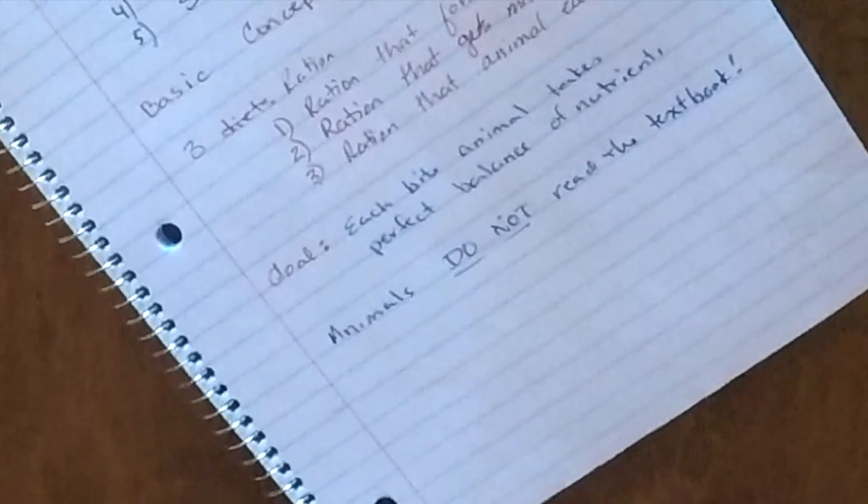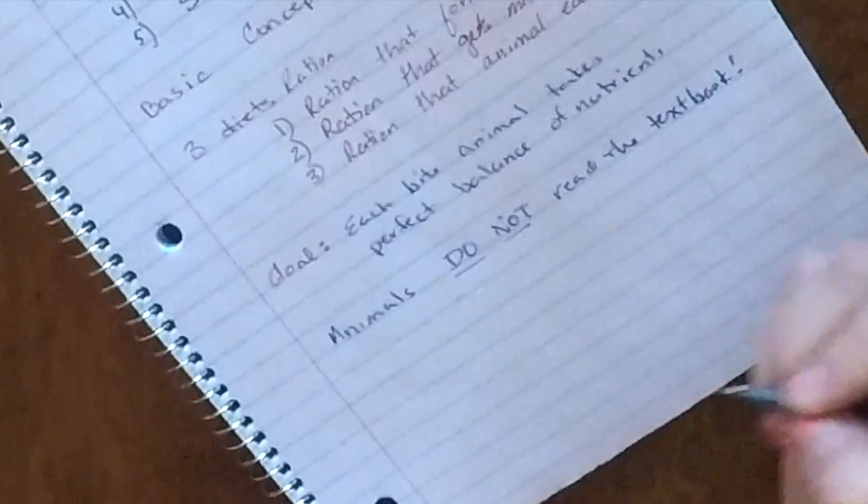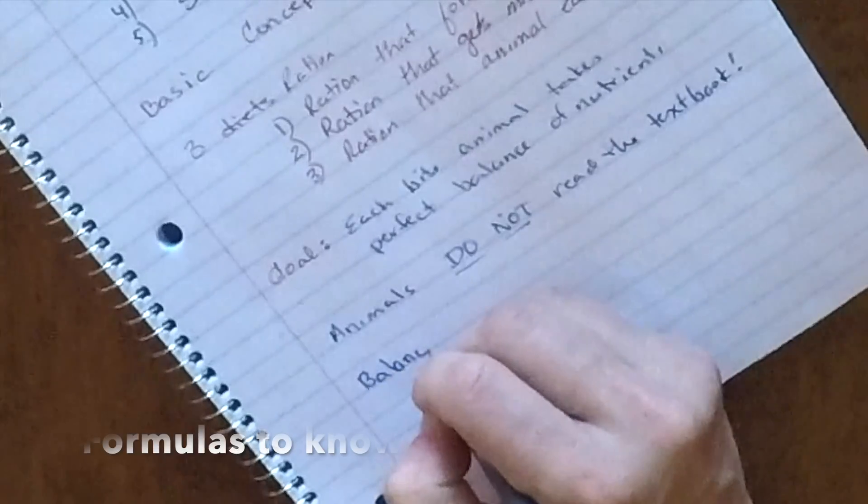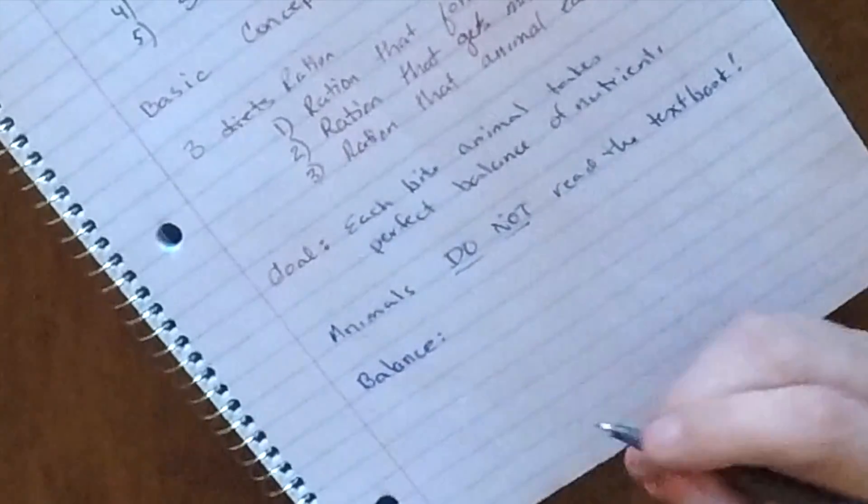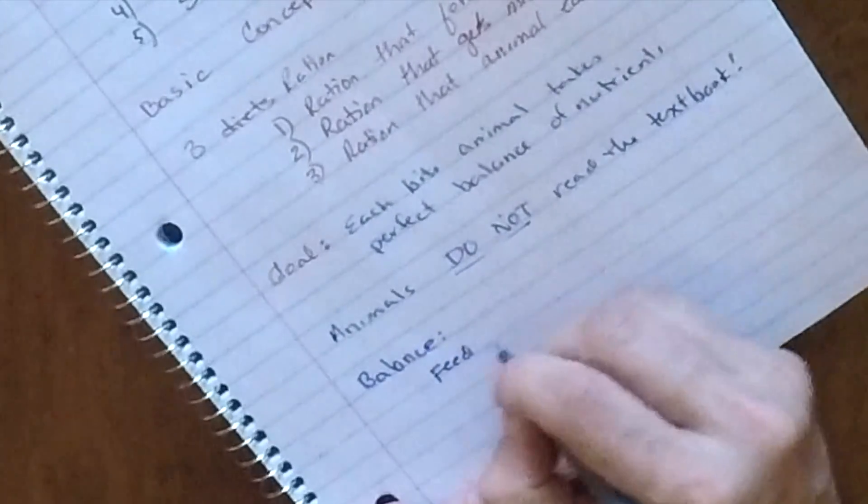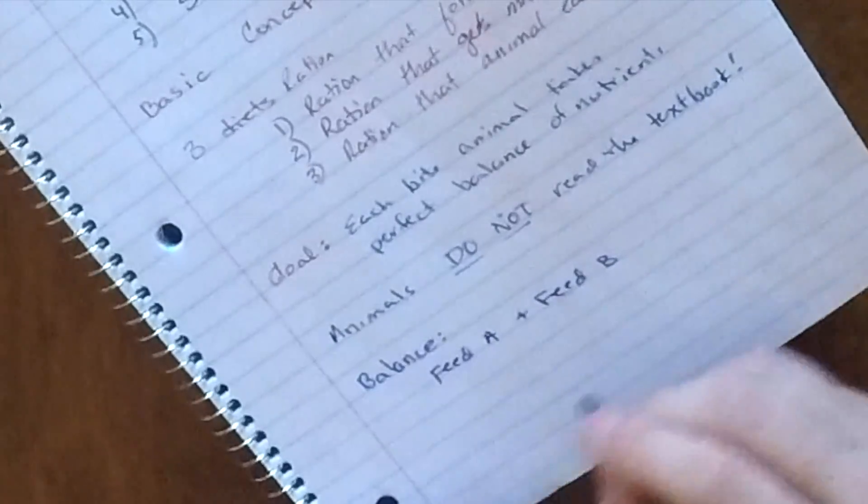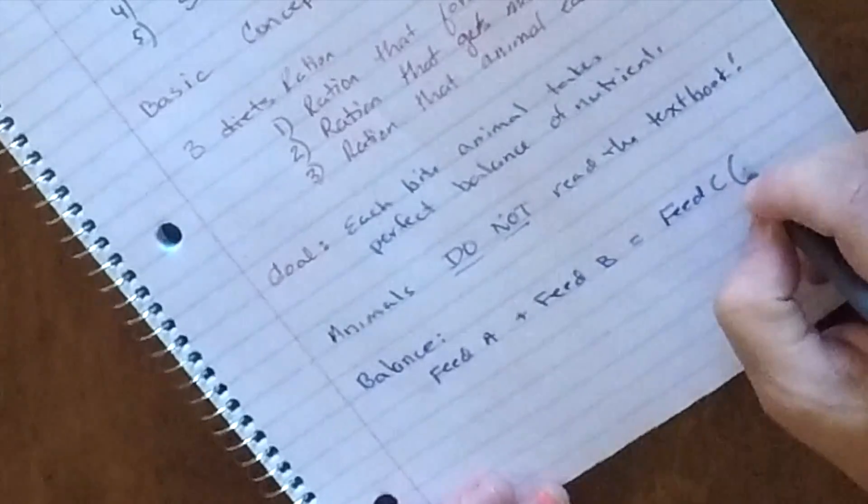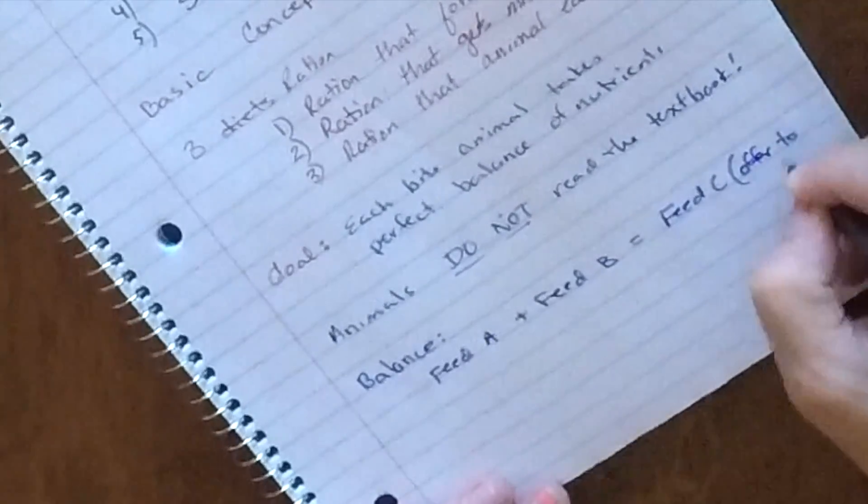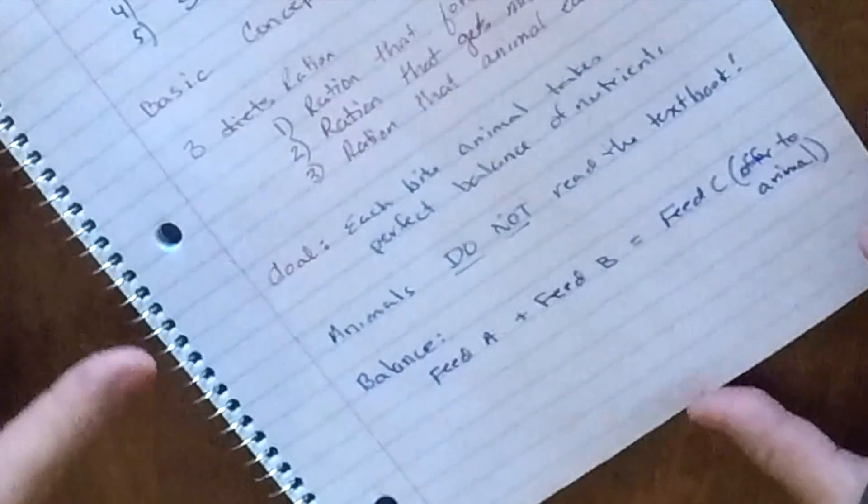The last one is just the concept of what we're doing with the rations. And so when we're balancing a ration, our goal is we're going to take some amount of feed A and we're going to blend it with feed B. And these two feeds together are going to give us our feed C, which is what we offer to the animal. And that should have that perfect bite and all of those things that we need to have.